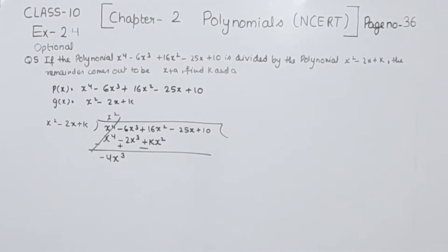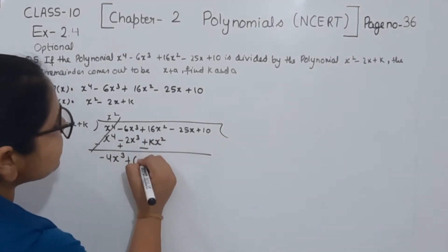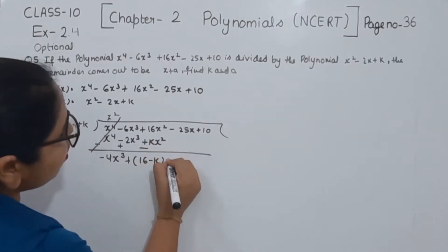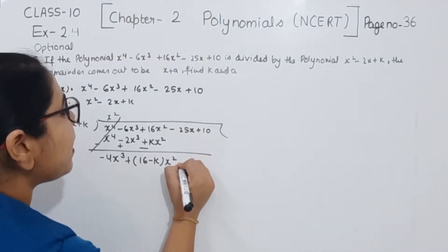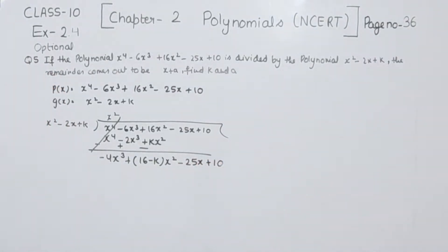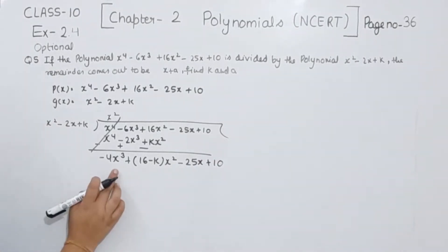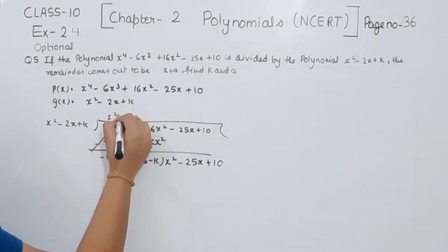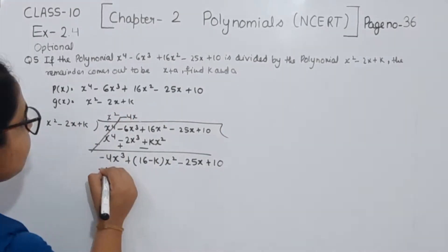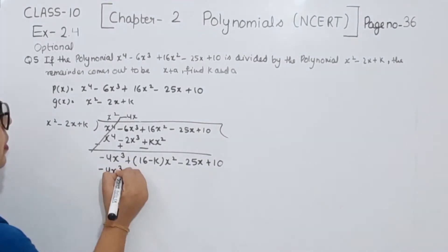Now we subtract. The coefficient 16 has a positive sign, so we write plus. This gives us 16 minus k, and x squared is common. We write that here, along with minus 25x plus 10. Dividing again, we need x to the power 3 and minus 4, so we write minus 4x to the power 3.